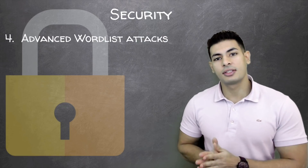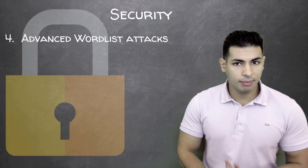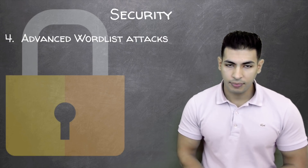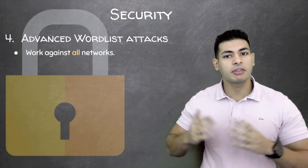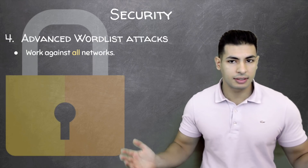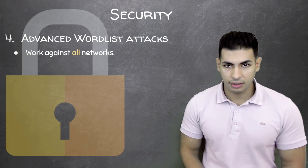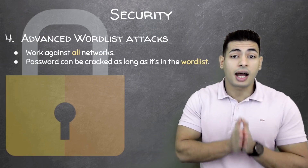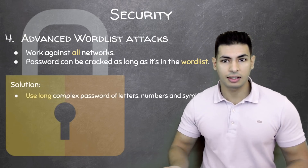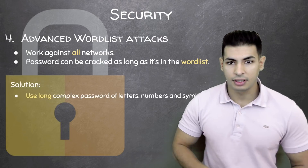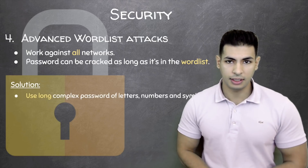Then we've seen more advanced wordlist attacks. If WEP is not used and WPS is disabled, we're talking about WPA or WPA2, and the only way to gain access to your network is using a wordlist attack. We've seen advanced wordlist attacks where we can use big word lists, save and restore progress, and use the GPU for cracking to make it faster. But all of these are still wordlist attacks — so if you use a long password, say a minimum of 16 characters with letters, numbers, and symbols, it's going to be very difficult to get your password even using these methods.